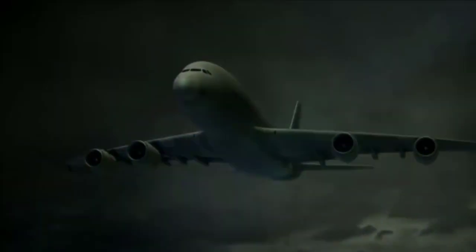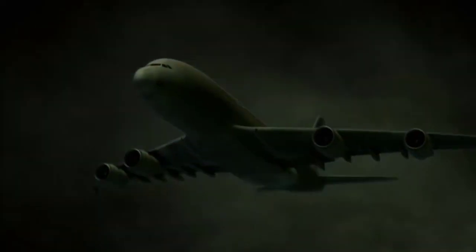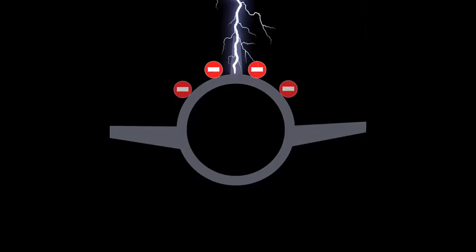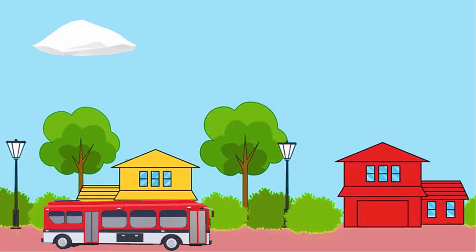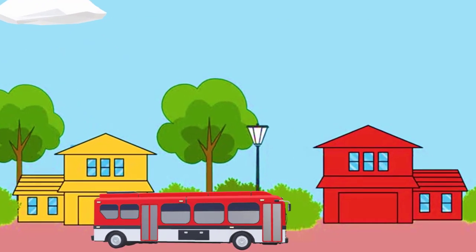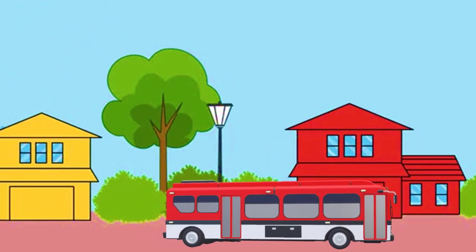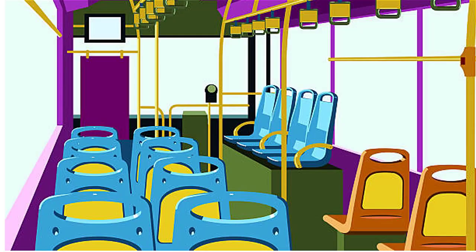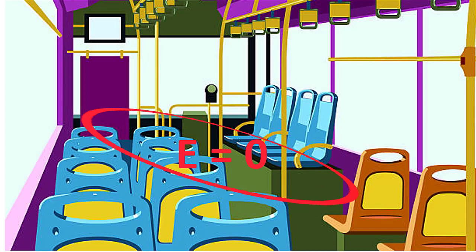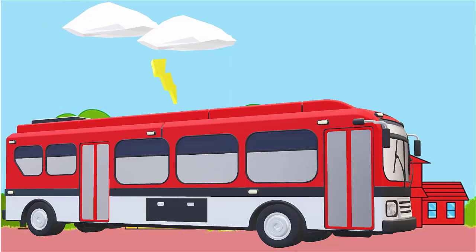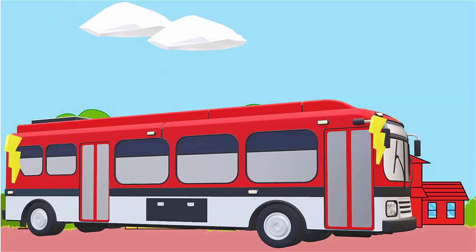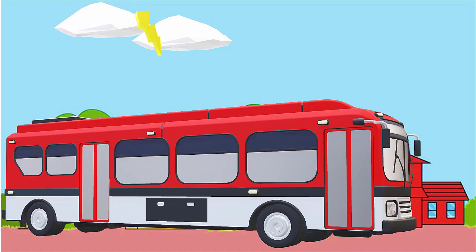The protective metal components of an aeroplane act as a Faraday's cage to protect its passengers from external electrical discharge such as lightning. It is always safer to sit inside a bus than in open ground or under a tree. The metal body of the bus provides electrostatic shielding since the electric field inside is zero. During lightning, the charges flow through the body of the conductor to the ground with no effect on the person inside the bus.